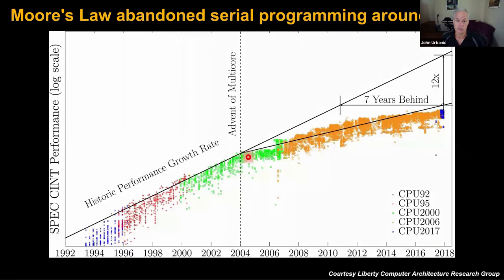Nobody really cares about clock speeds anymore. If you bought a computer this past year, it probably ran at two or three gigahertz. If you bought a computer ten years ago, it ran at two or three gigahertz. And if you buy a computer five years from now, it's going to run at two or three gigahertz. Things are not doubling every couple of years anymore, and you can see that in this graph.